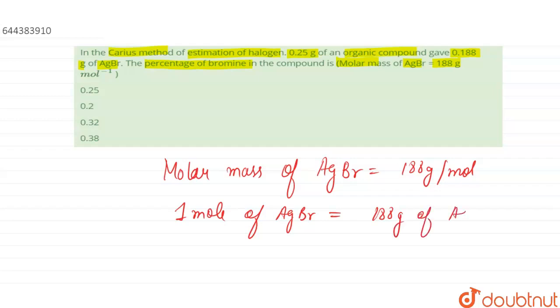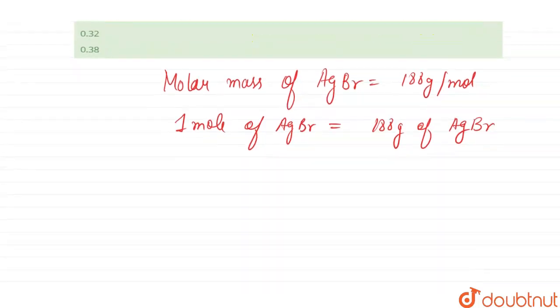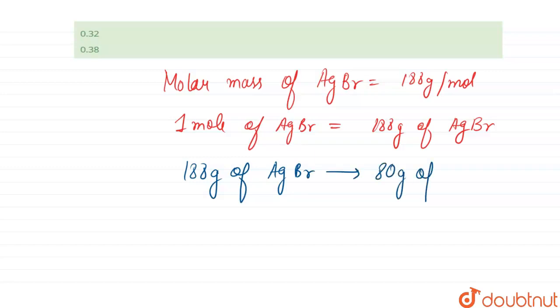Can I also say that 188 gram of silver bromide will have 80 gram of bromine, which is the molar mass of bromine, that is 80 gram, right?